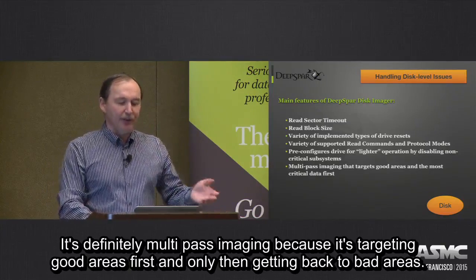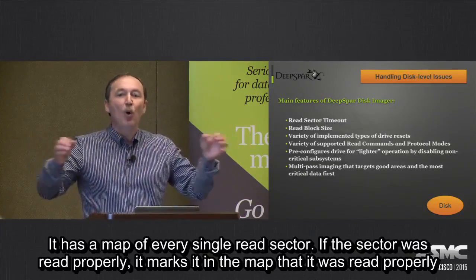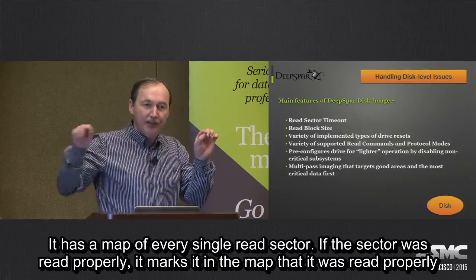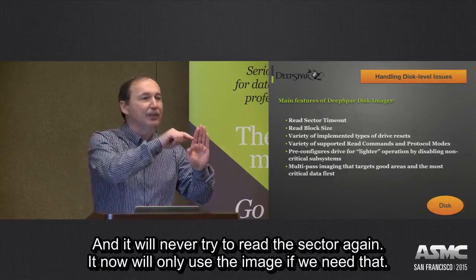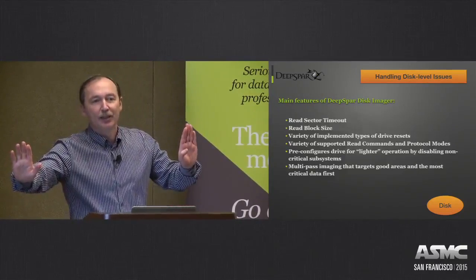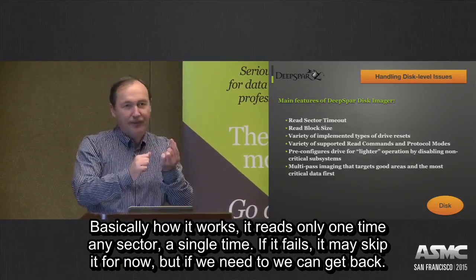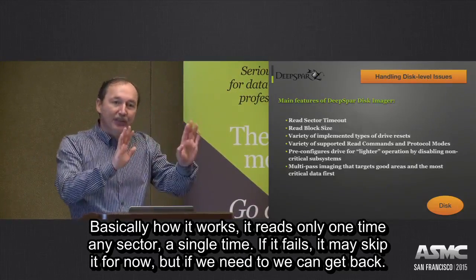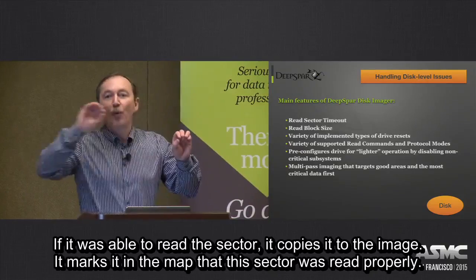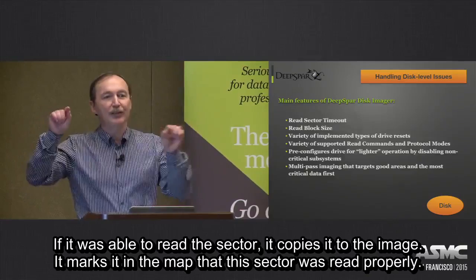It's definitely multipass imaging, because as I said, it targets good areas first and only then gets back to bad areas. It has a map of every single read sector. If a sector was read properly, it's marked in the map and it will never try to read that sector again. Basically, it only reads any sector a single time. If it fails, it may skip it for now, but we can get back. At any time, if it was able to read the sector, it copies it to the image and marks it in the map that the sector was read properly.